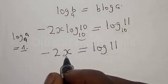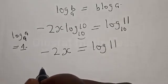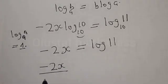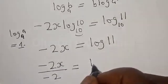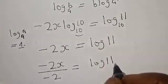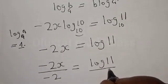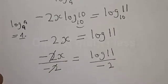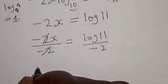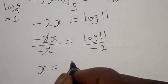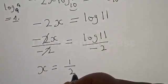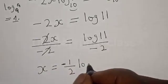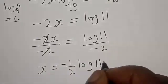Now let's divide both sides by minus 2. We have minus 2s divided by minus 2 is equal to log 11 divided by minus 2. The minus 2 cancels out, so s is equal to minus 1 divided by 2 times log 11.